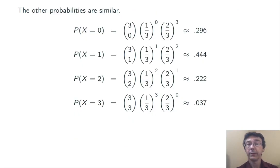We compute the probabilities that x is 1, 2, and 3 exactly the same way. For example, the probability that x equals 1 is going to require us to multiply two thirds squared. We need two failures.